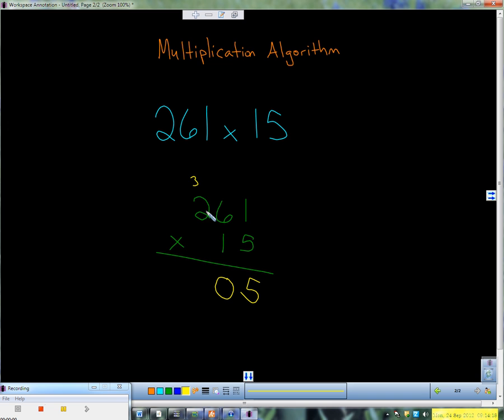5 times 2 is 10. Then we add that 3. 10 plus 3 is 13. There's no numbers left for me to carry anything, so I'm just going to write 13 down here.